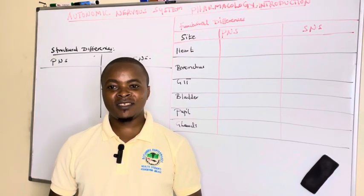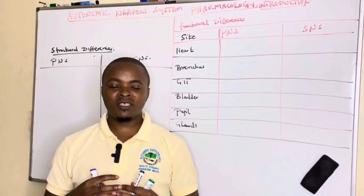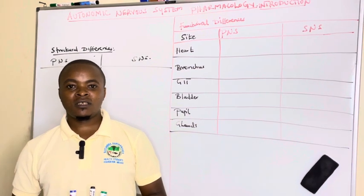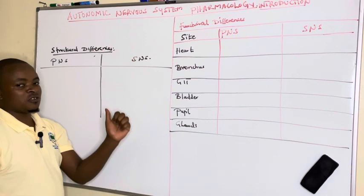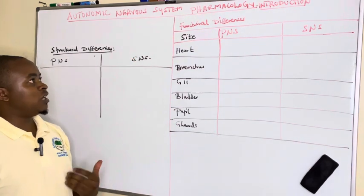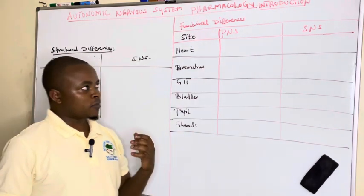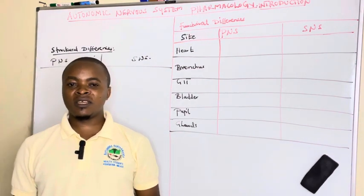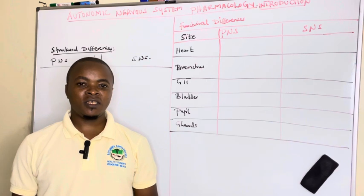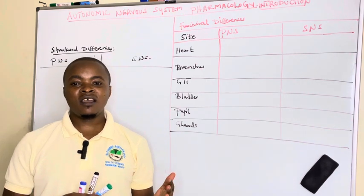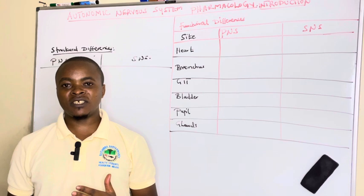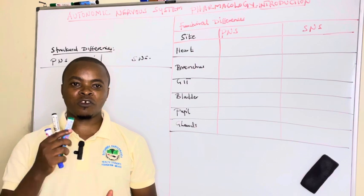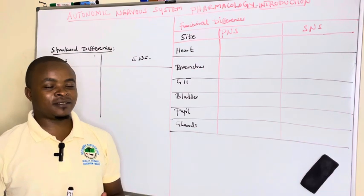Welcome to this session where we want to discuss Autonomic Pharmacology, what we call ANS in short. We want to see the brief anatomy and physiology of the Autonomic Nervous System, whereby we shall look at the different structural and functional differences between the different branches of the Autonomic Nervous System.